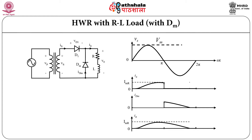If we see the source current in this case, source current and output current are different. During positive half cycle, load takes current from the source. During negative half cycle, the energy stored in the inductor is used and converted into current.